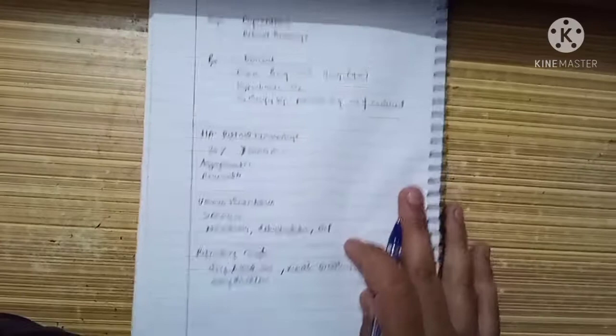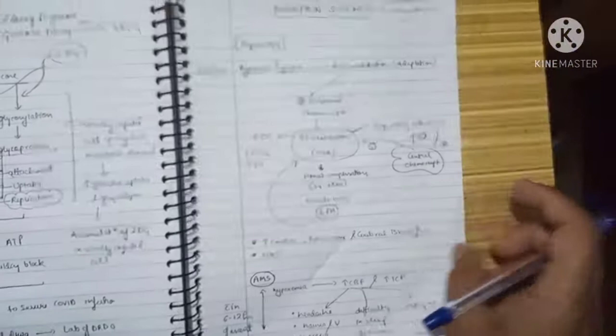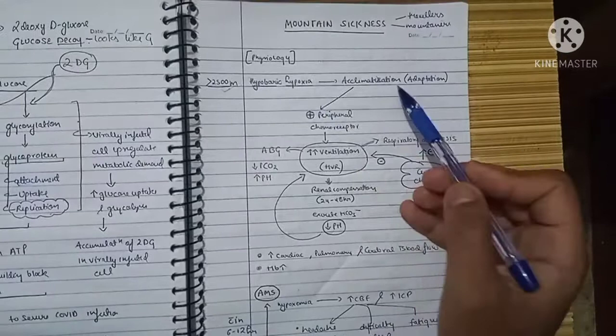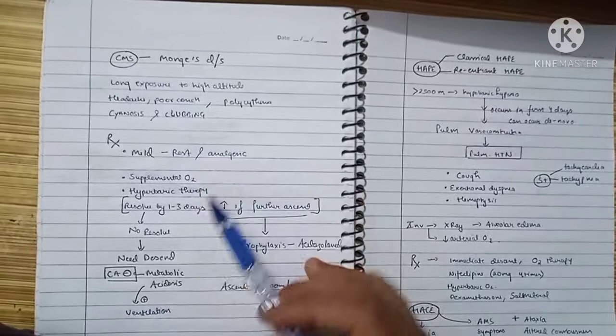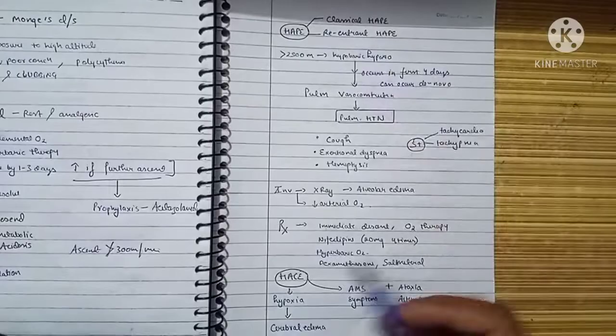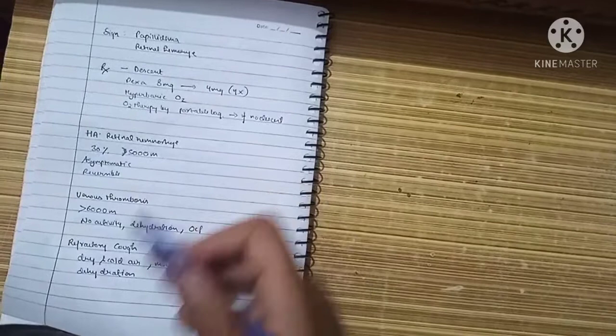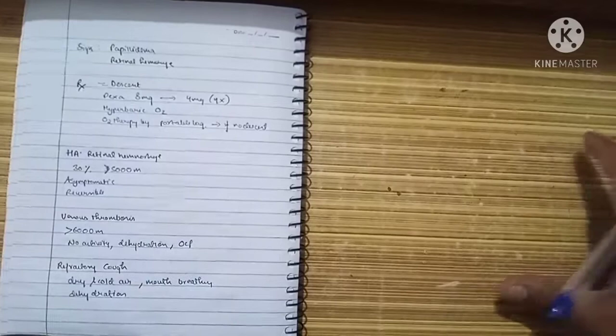To summarize: we talked about high altitude physiology, how hypobaric hypoxia leads to acclimatization, respiratory alkalosis, and increased ventilation. We discussed acute mountain sickness, chronic mountain sickness, and their treatments. We covered fatal conditions like HAPE and HACE, their treatment modalities, high altitude retinal hemorrhage, venous thrombosis, and refractory cough. Thanks for watching.